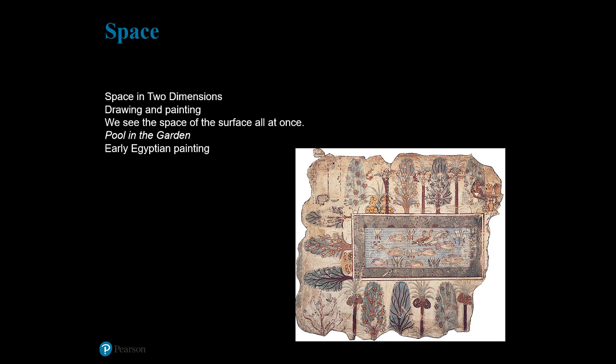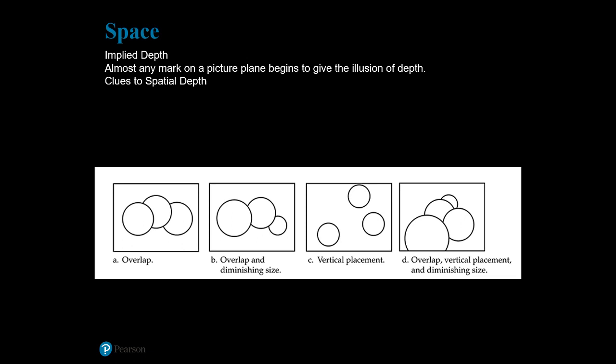This diagram illustrates some of the tools used for implying depth. The illusion of depth is heightened considerably by combining overlapping with diminishing size. Another pictorial technique is vertical placement — objects placed low on the picture plane appear closer to the viewer, and those placed higher appear farther away. By combining overlapping, vertical placement, and diminishing size, you can achieve an even more convincing effect of depth.